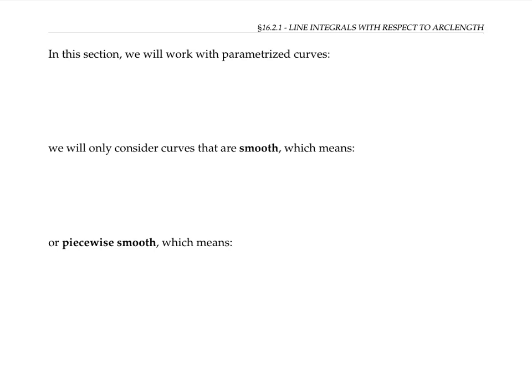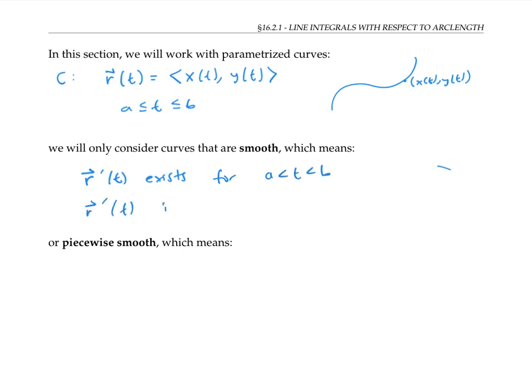In this section, we'll work with parametrized curves. That is, a curve C that's parametrized by some vector function r of t, which can be written as x of t, the x values, and y of t, the y values, where t ranges between two numbers a and b. We'll only consider curves that are smooth, which means that under some parameterization, r prime of t exists for the values of t that we're interested in, and r prime of t is never zero.